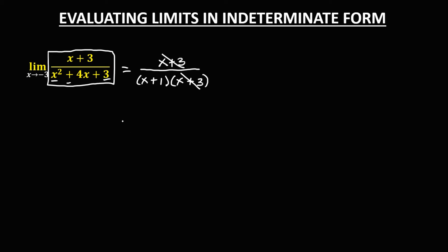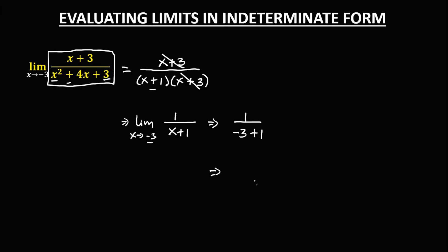We can cancel the (x + 3) terms. The new equation is the limit of 1 over (x + 1) as x approaches negative 3. Substituting x = -3, we get 1 over (-3 + 1), which is 1 over negative 2. Therefore, the limit is equal to negative 1 over 2.